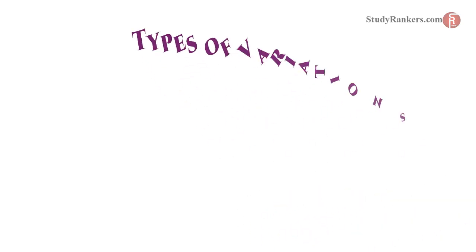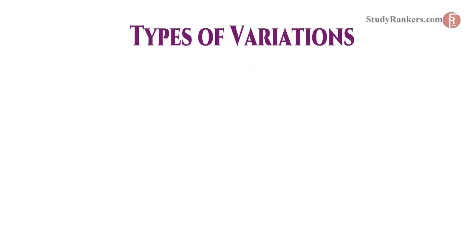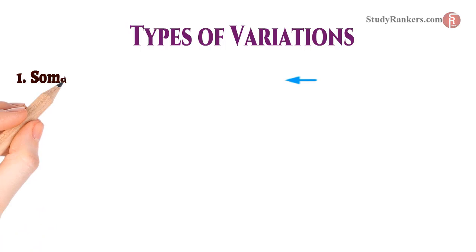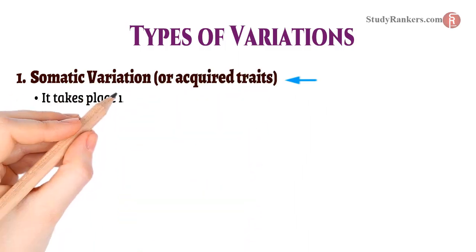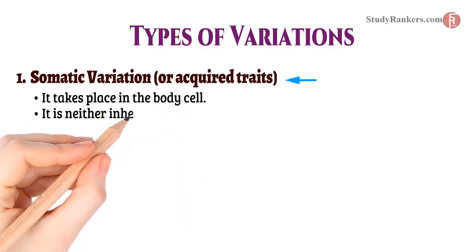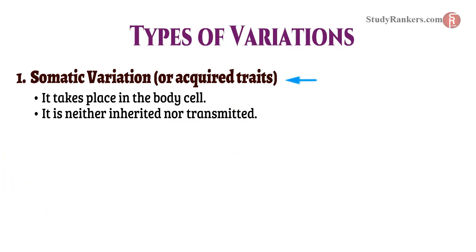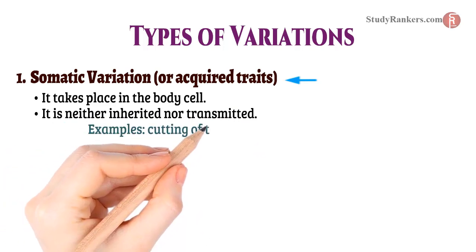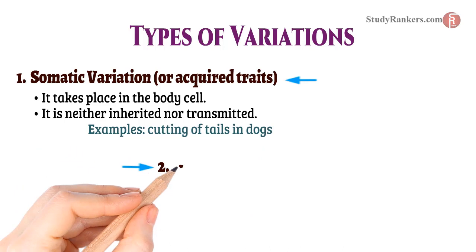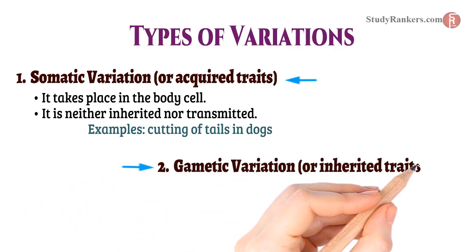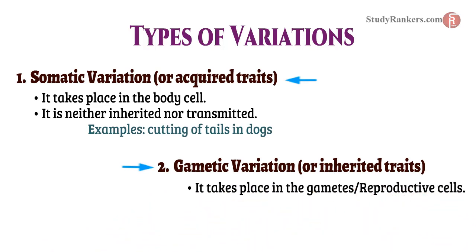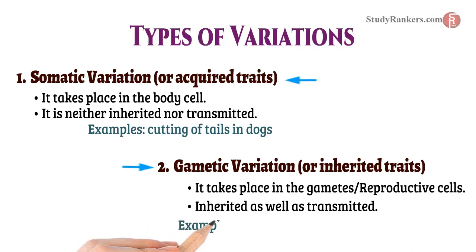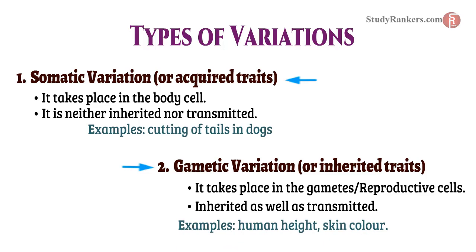Types of variation: Variations are of two types. The first one is Somatic variation, or Acquired trait. It takes place in the body cell. It is neither inherited nor transmitted. Example: cutting of tails in dogs. The second one is Gametic variation, or Inherited trait. It takes place in the gamete or reproductive cell. It is inherited as well as transmitted. Examples are human height and skin color.